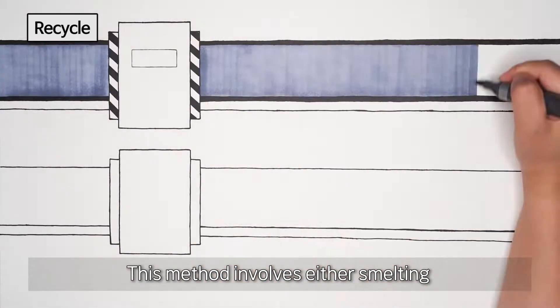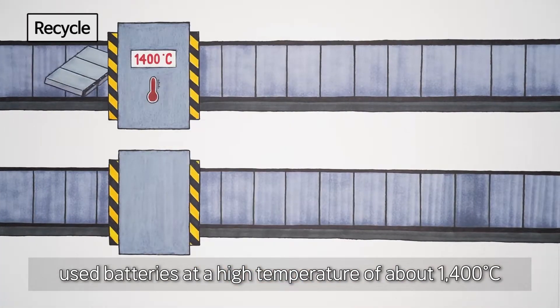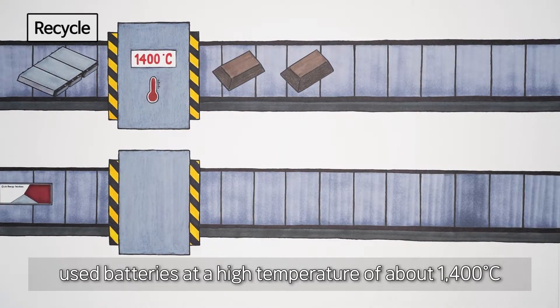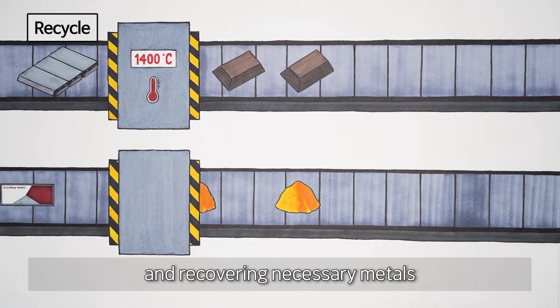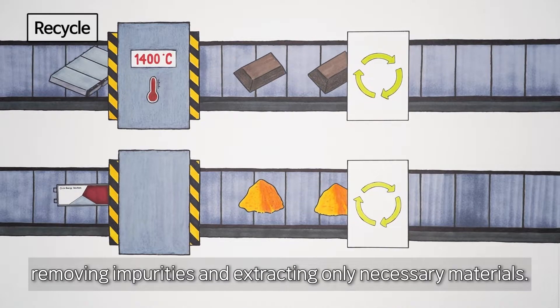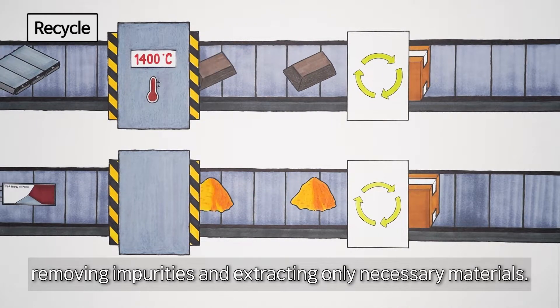This method involves either smelting used batteries at a high temperature of about 1,400 degrees Celsius and recovering necessary metals, or pulverizing cells, removing impurities and extracting only necessary materials.